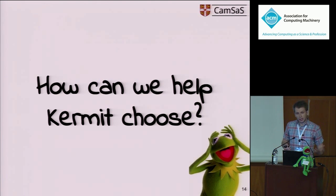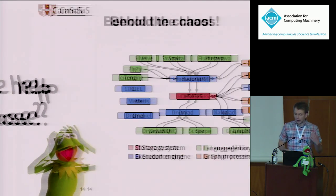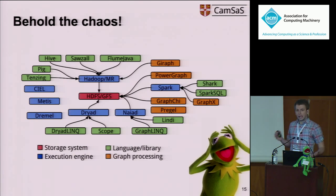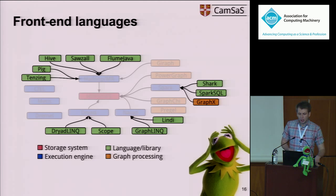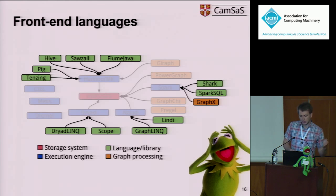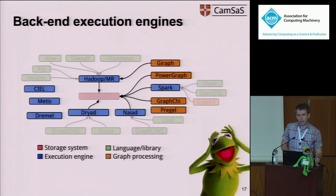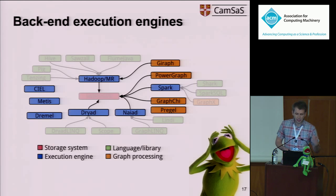How can we help Kermit pick the right system? If we step back and look at the landscape, we observe two types of systems. On one hand, we have languages and libraries used to express the computation — a few examples are GraphLink, Lindy, and SparkSQL — which I'll call front-end languages. Then there are systems used to run the computations, such as MapReduce or Spark, which I'll call back-end execution engines.